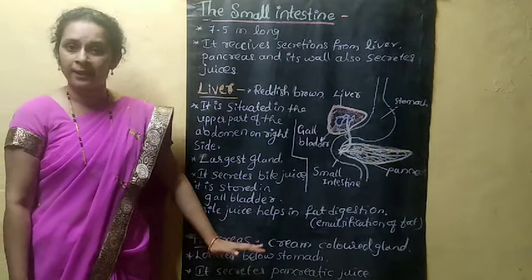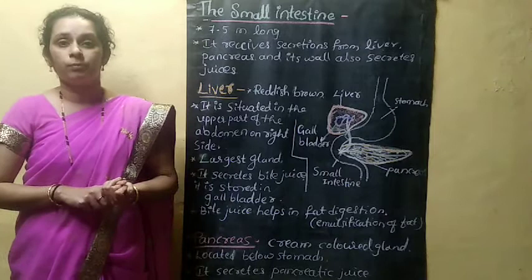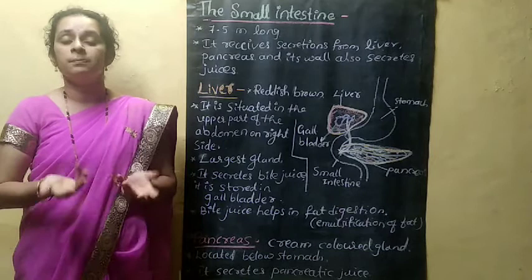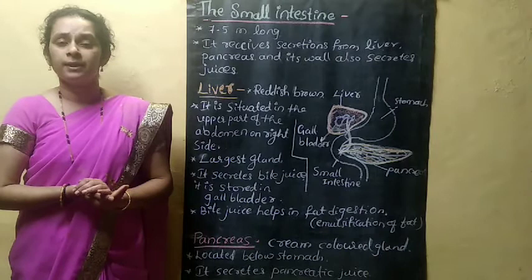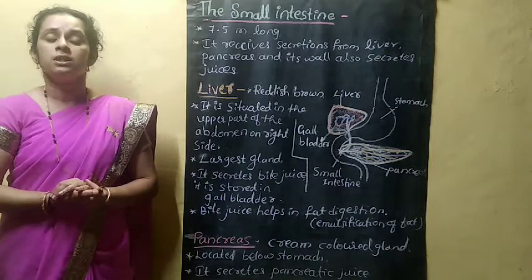The pancreas secretes pancreatic juice, which acts on all types of food components. It acts on carbohydrates, proteins, and fat molecules, converting them into simpler substances. There are different enzymes present in pancreatic juice: pancreatic amylase, lipase, and trypsin. These enzymes act on different components of food and convert them into simple forms.